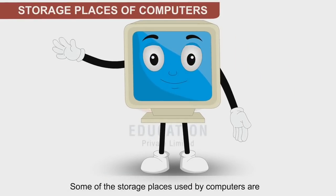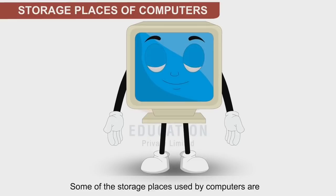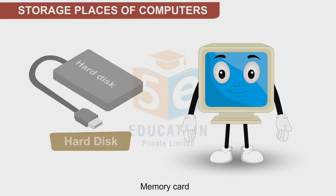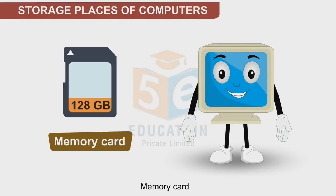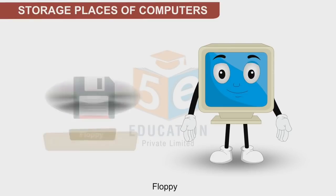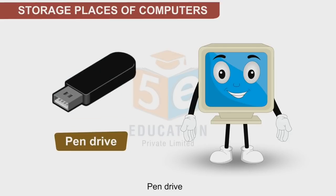A computer can store files, images, videos, songs, movies, games, and more in its memory. Some of the storage places used by computers are: hard disk, memory card, CDs and DVDs, and floppy disk.